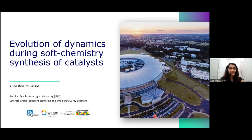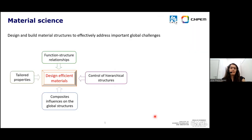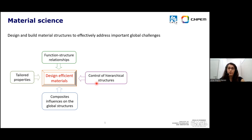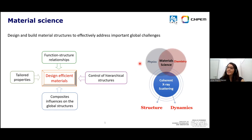As Dina told you, we are talking about XPCS mainly for the study of soft chemistry synthesis of catalysts. For the design of efficient catalysts, we have to use all the tools we have available in material science. We have to understand the properties, the mechanisms, and also be able to answer questions like how we can control hierarchical structure and what is the relationship between function and structure. For this, we have to combine physics and chemistry. During this presentation, I will show you how we can use coherent X-ray scattering techniques to probe dynamics and structure that can help us answer some of these questions.